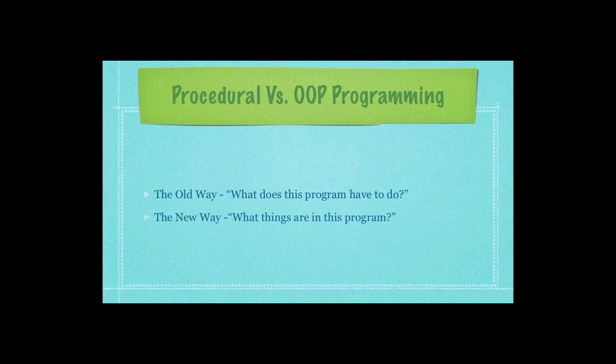Object-oriented programming instead asks what things are in this program, and what functions must those things be able to perform, as well as what variables should be associated with those things.